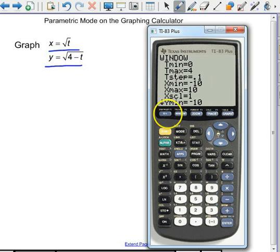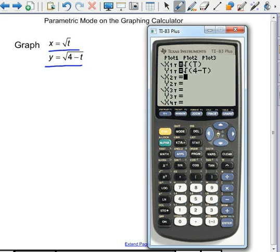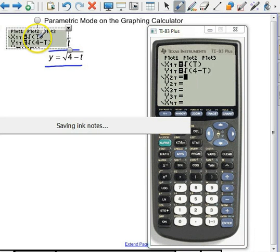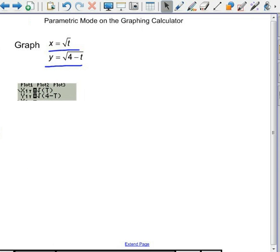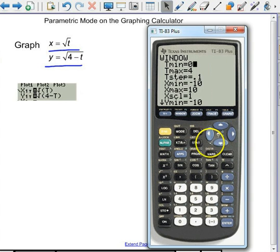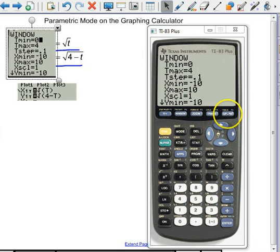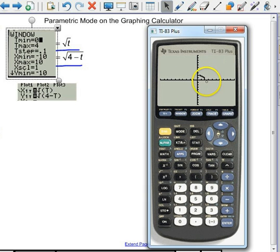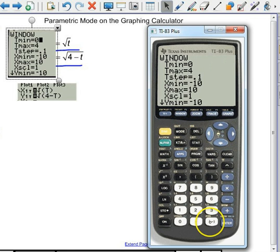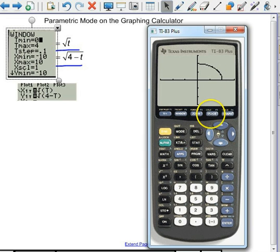Let me grab that with a screen capture. And when we hit graph, you see that we get what looks like a quarter of a circle. And if I adjust my window, let's let x min go from negative 3 to 3, and y min negative 3 to 3. And that's a better picture there. And if we want, we can do a zoom square. And you can see that we get a quarter circle.